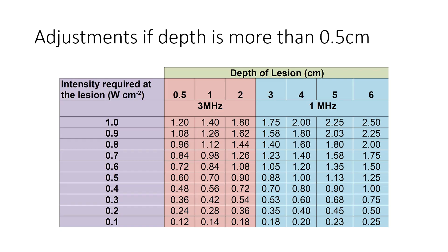Sometimes we need to make adjustments to the intensity. If the treatment depth is less than 0.5 centimeters, it is not considered necessary to use the adjustment table, as not enough of the surface dose will be lost to make a clinical difference. However, if the injury is at one centimeter depth and the intended treatment intensity is 0.4 watts per centimeter squared, then using three megahertz, you should set the machine at 0.56 watts per centimeter squared — or as near as the machine allows — so that at one centimeter depth approximately 0.4 watts per centimeter squared remains.